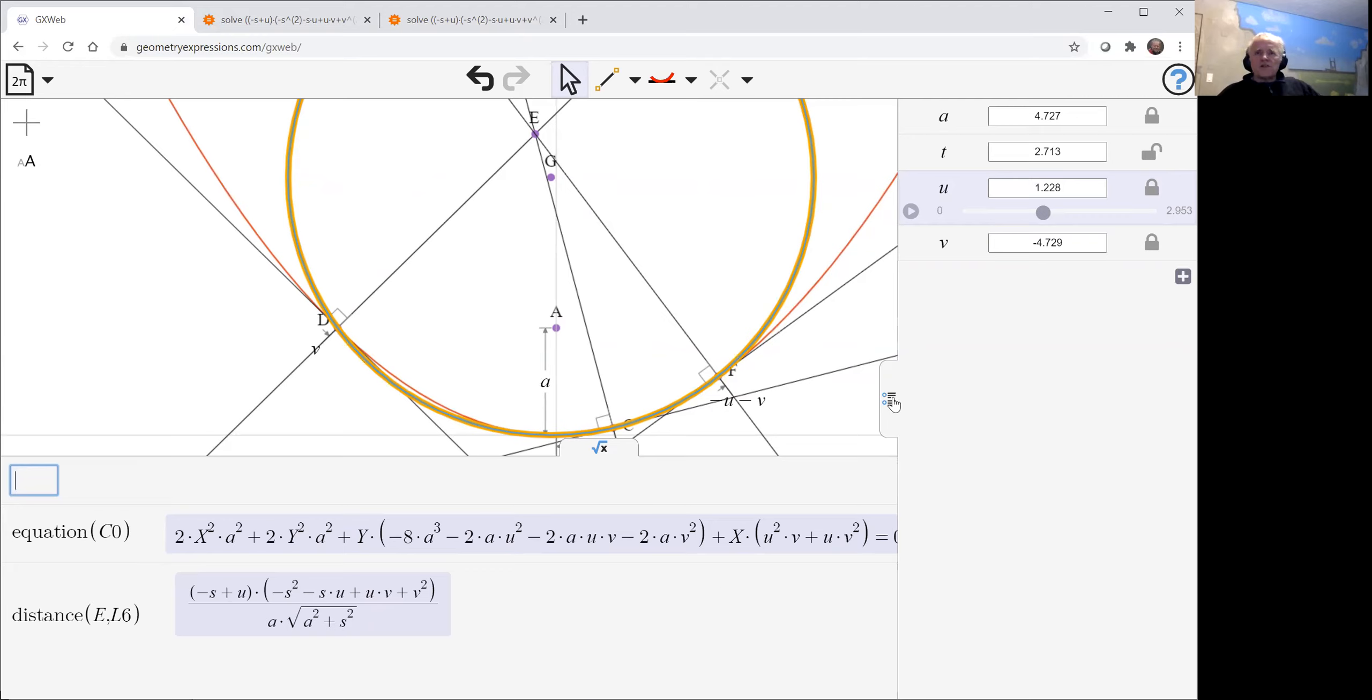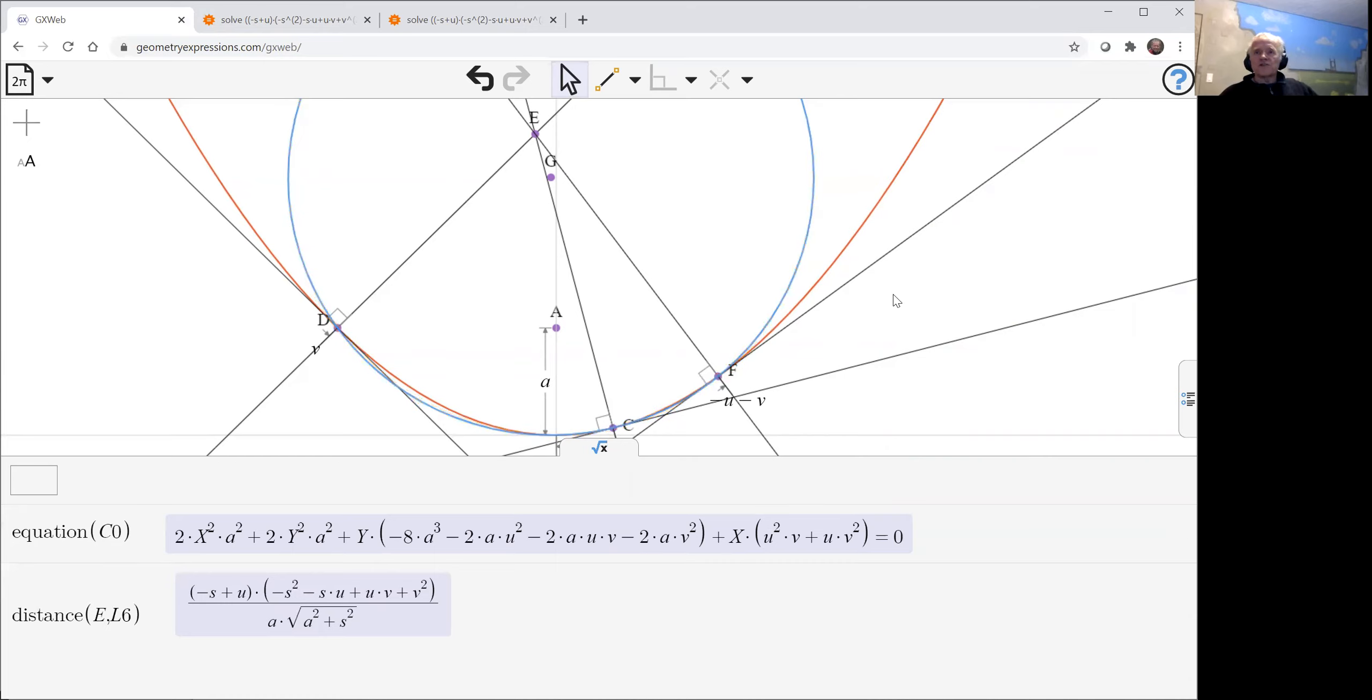And to take a look at that equation, we can see there is in fact no constant. There's an x squared term, a y squared term, a y term and an x term, but no constant. So therefore, x equals zero, y equals zero, the origin is going to satisfy that equation and lie on that circle.